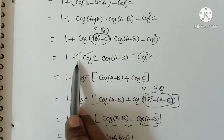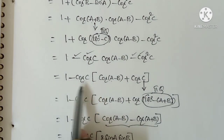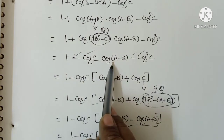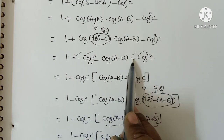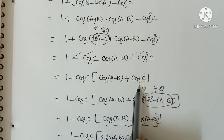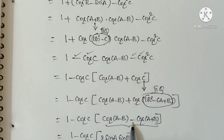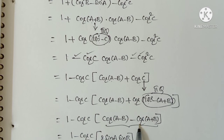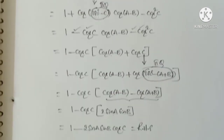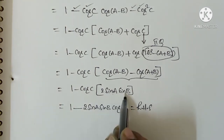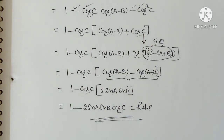Taking minus cos C as common gives 1 minus cos C times (cos(A-B) minus cos(A+B)). The remaining term inside becomes cos(A-B) minus cos(A+B). Again, C equals 180 minus (A+B), so in the second quadrant cos is negative. Applying the formula cos(A-B) minus cos(A+B) equals 2 sin A sin B, we get 1 minus 2 sin A sin B cos C. This is our RHS. So 1 minus 2 sin A sin B cos C is the answer.